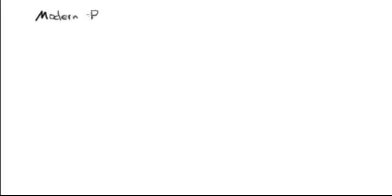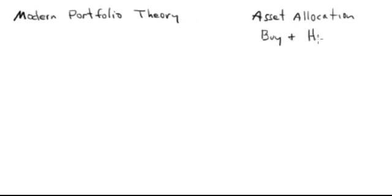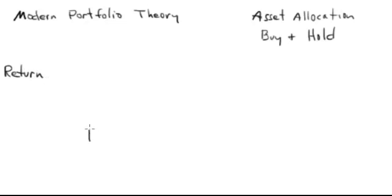We are going to talk about modern portfolio theory. Most of you watching this video have the typical asset allocation buy-and-hold strategy that your advisor — whether they're at Merrill Lynch or Edward Jones — is telling you to follow. This is all based on modern portfolio theory, hypothesized by Harry Markowitz in 1952. What he basically said is: on one axis you have return, and on the other axis you have risk.